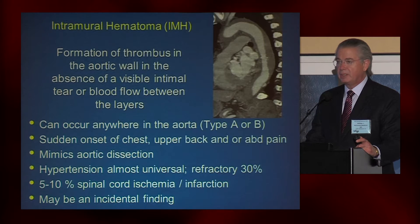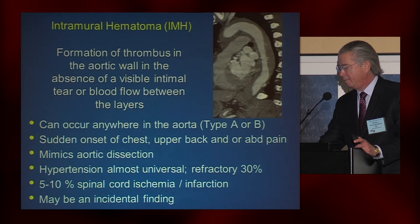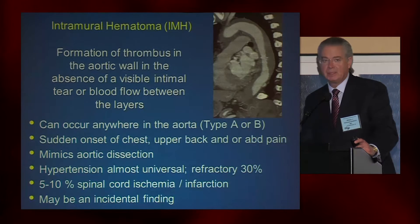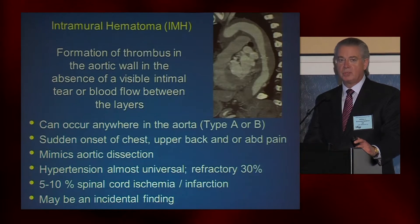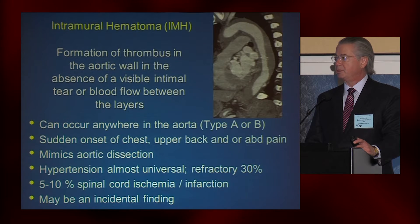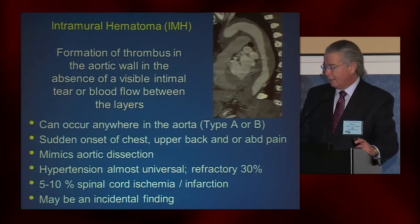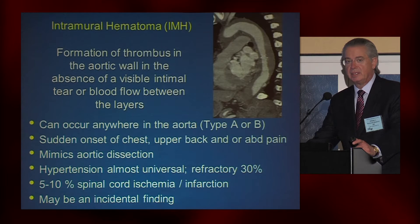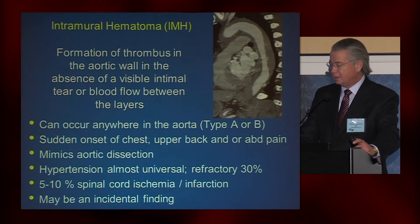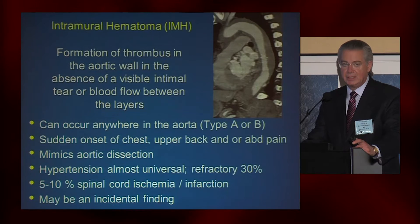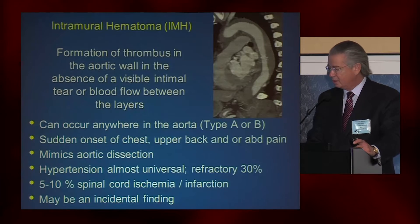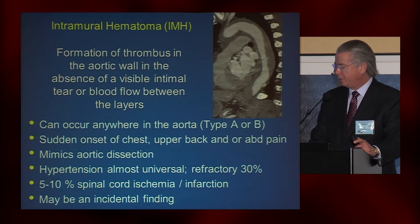It usually presents with sudden onset of chest pain, upper back, or abdominal pain, and it mimics aortic dissection in its clinical presentation. Hypertension is almost universal and refractory in about 30% of patients. About 5 to 10% of patients can present with spinal cord ischemia as the initial presentation, and it may actually be an incidental finding when a CT is done for some other pathology.